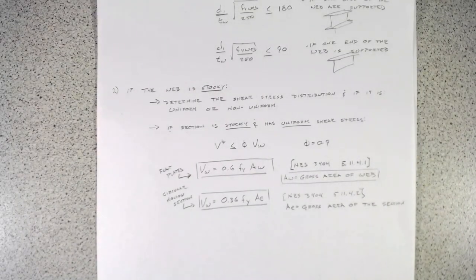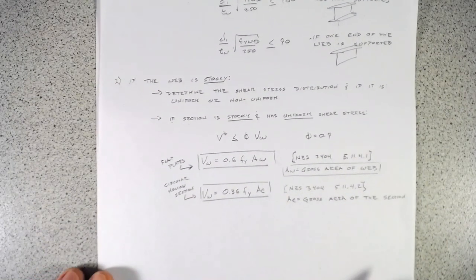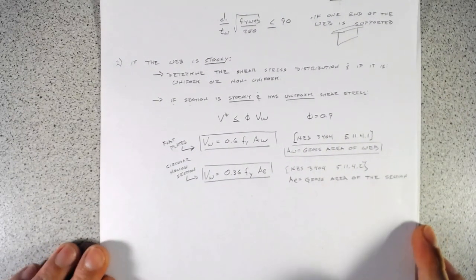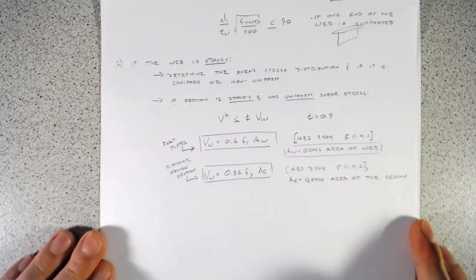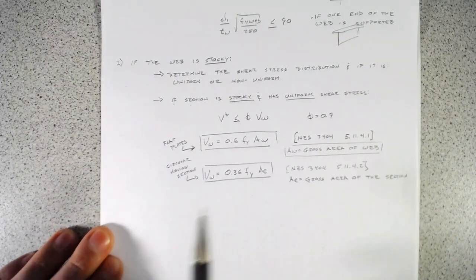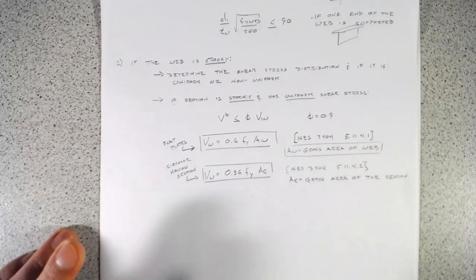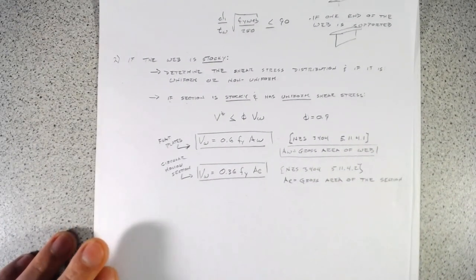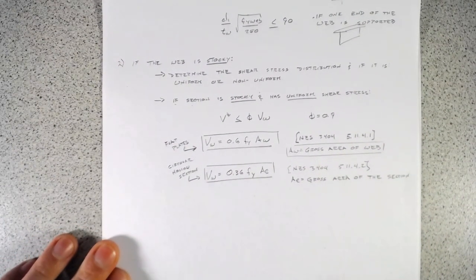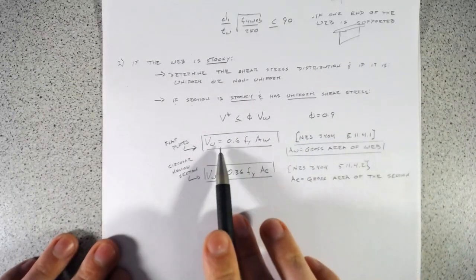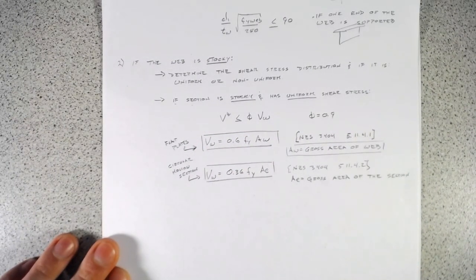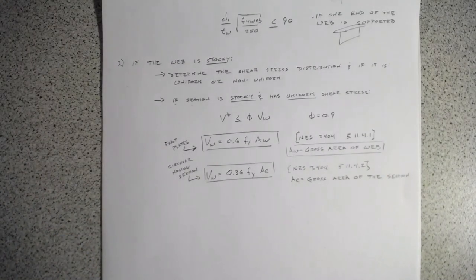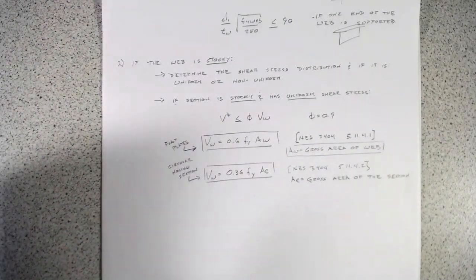The 0.6 factor may seem arbitrary, but multiplying 0.9 × 0.6 gives approximately 0.54, which is close to the 0.5 reduction applied in some overseas codes like the US code where φ = 0.75 for shear. This helps keep us well away from shear failure.